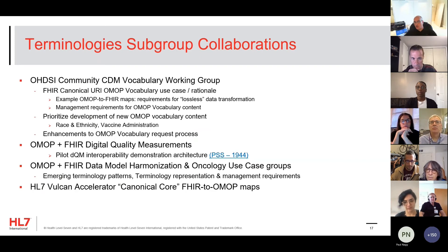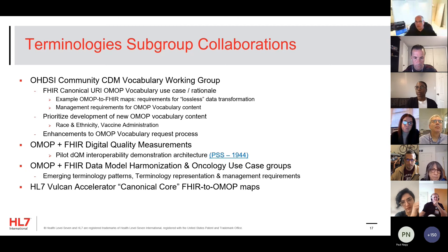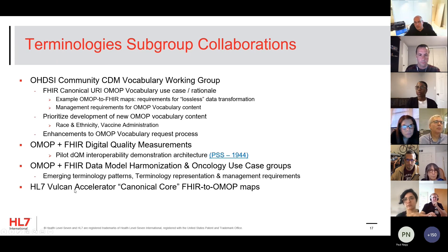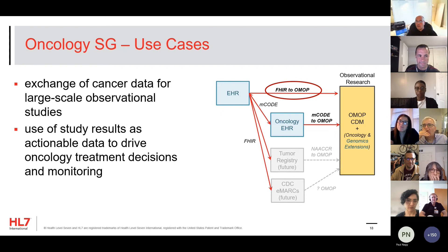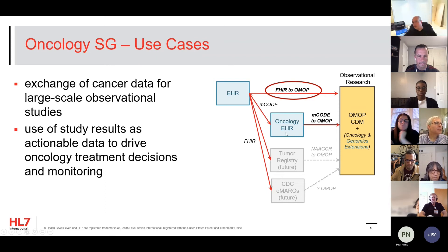The terminology subgroup is a very different world — different people, different language — going in many directions. Key concerns include lossless data transformation, which is top of mind for the FHIR community, and deciding which vocabulary to prioritize, driven by use case. There's also the Vulcan Accelerator within HL7 to support clinical research, and a FHIR-to-OMOP mapping program there. The oncology use case uses mCODE, a FHIR standard, covering EHR and tumor registries.